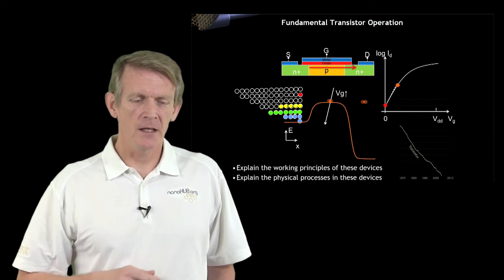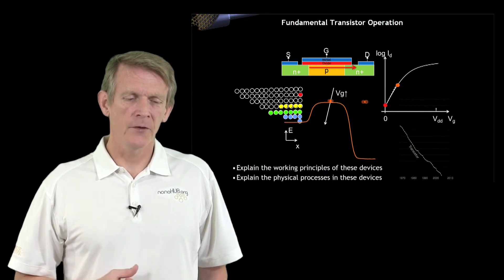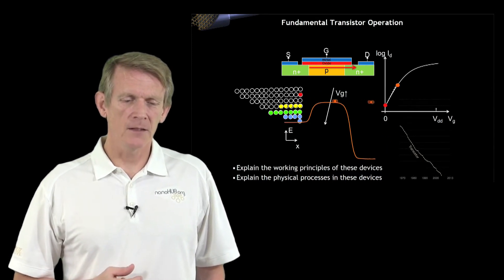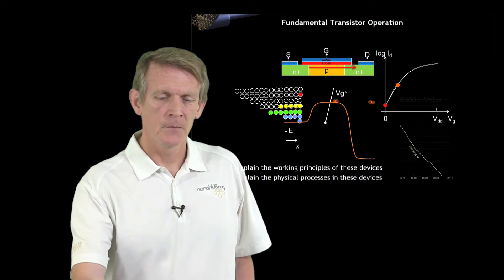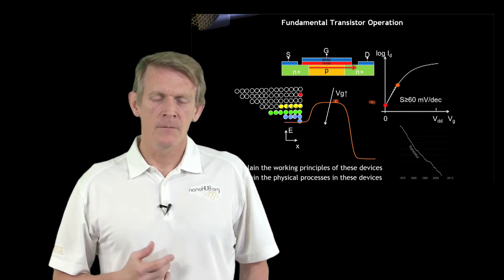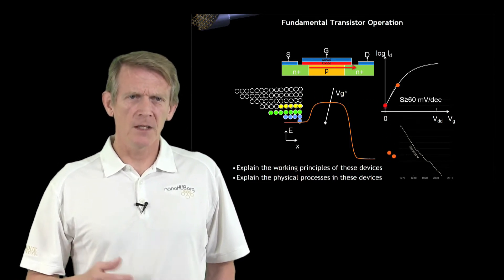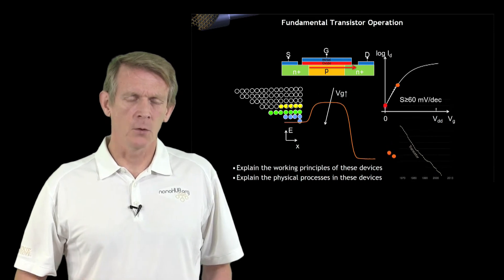As you increase the gate voltage, you expose more electrons to a free path throughout the device, and the current will increase. We'll learn that this device has a limitation of 60 millivolt per decade rise. You'll understand what that means by the end of this course.